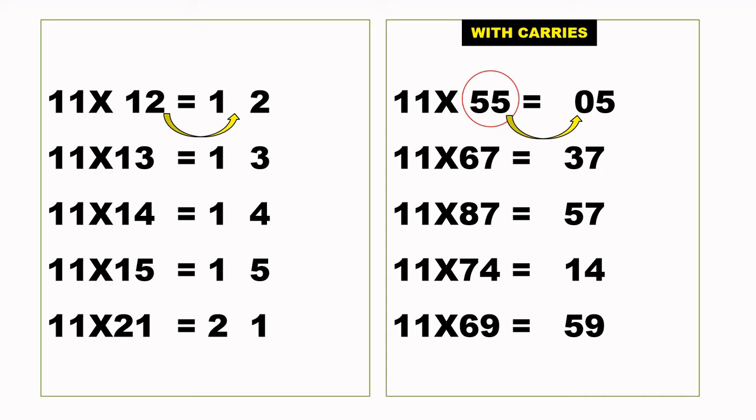Now, multiplying 11 by 12, we add these two digits. So 1 plus 2 equals 3, our answer is 132. We do the same for the rest.